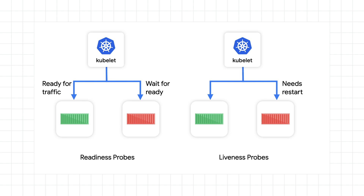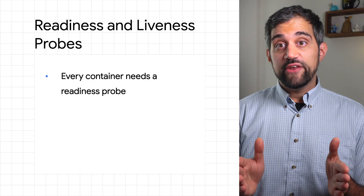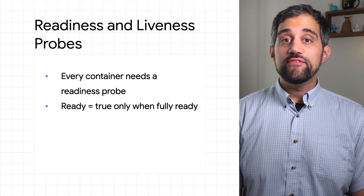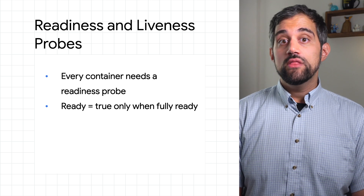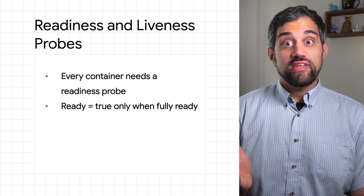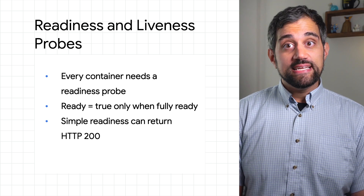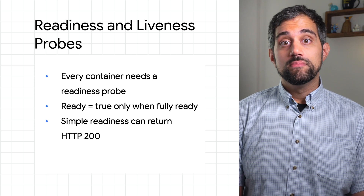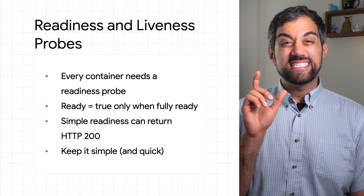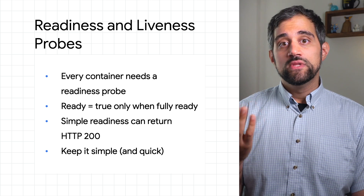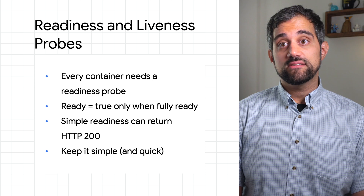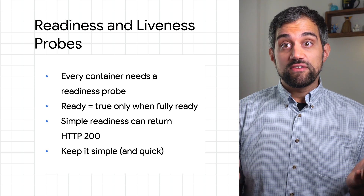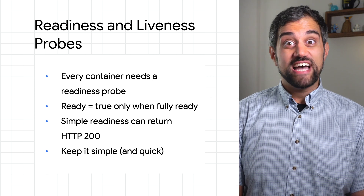Here are some best practices for working with probes. Always define readiness probes for every container. Know when your application is actually ready — for example, if your app depends on a cache being loaded, the readiness probe should only say the pod is ready after that cache has been loaded. If your app doesn't need any startup time, define a simple readiness probe such as just returning HTTP 200. Also, make sure the code for your probes is as simple and isolated as possible, so there are no blockers when Kubernetes is requesting the status. Your probe logic should try to avoid remote services, and if you have to use something remote, try to test against the simplest and hopefully fastest one.